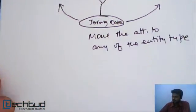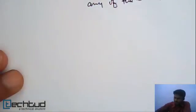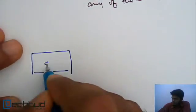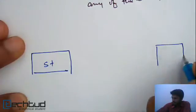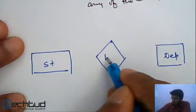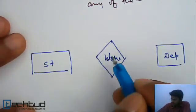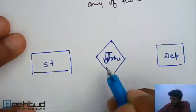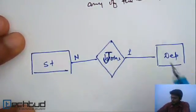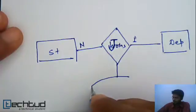But this is not the case when we have a one-to-N relationship. Let's consider another example. This is student and this is department. The relationship is student joins a department. Multiple students can join a department, so the relationship is N-to-1. In this case, if there is an attribute like joining date, we have to think about which side we can move this attribute.